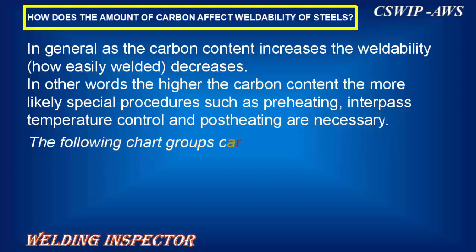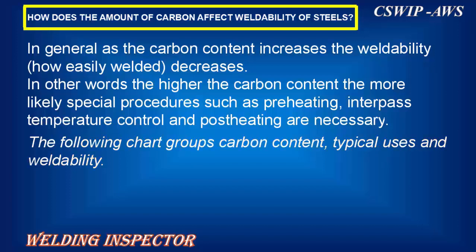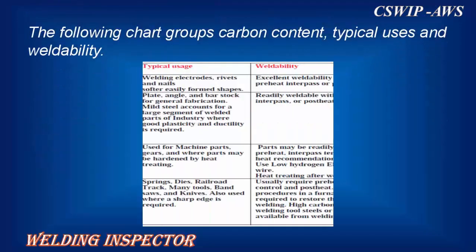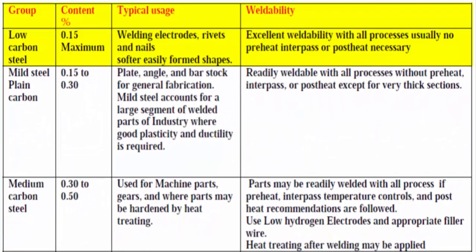The following chart groups carbon content, typical uses, and weldability. Low carbon steel content: 0.15% maximum. Typical usage: welding electrodes, rivets and nails, softer easily formed shapes. Weldability: excellent with all processes; usually no preheat, interpass, or post-heat necessary.